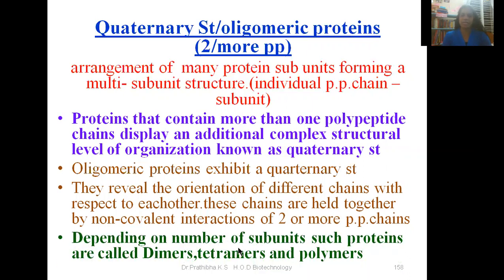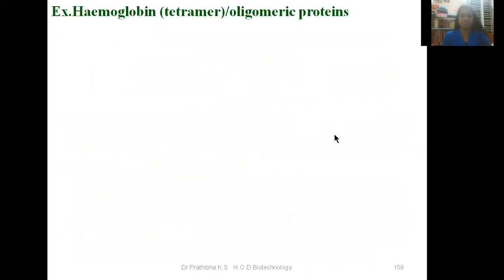Depending on the number of subunits, such proteins are called dimers, meaning the presence of two polypeptide chains; tetramers, with four polypeptide chains; and polymers, with many polypeptide chains.